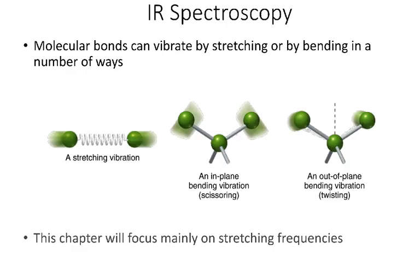Infrared radiation interacts with molecules via their vibrations. There are a number of different ways that molecules can vibrate: stretching vibrations, bending vibrations, and out-of-plane twisting. In this chapter, we're going to focus mainly on stretching frequencies, because they're the most useful in identifying functional groups and compounds, which is one of the primary things we use IR spectroscopy for.